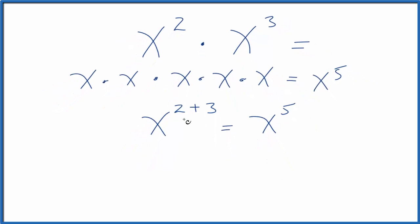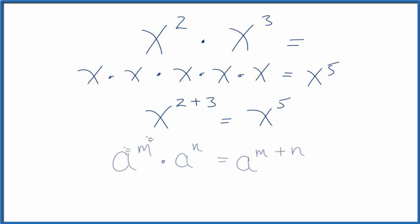If we wanted to look at this as a more general rule, that would look like this. So we had two here and three here, so we just added those together, and that gave us x to the five. That's how we figured that out. So this is a more general rule, which is useful.